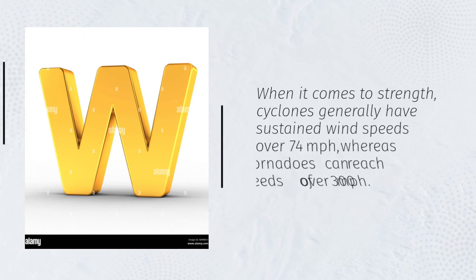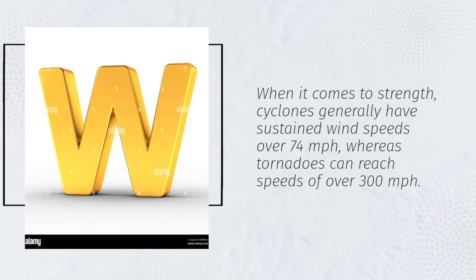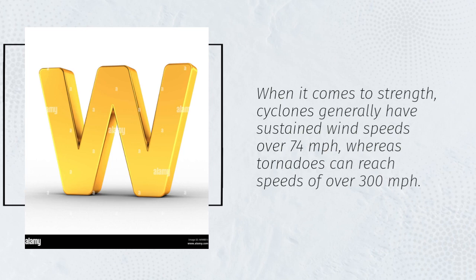When it comes to strength, cyclones generally have sustained wind speeds over 74 mph, whereas tornadoes can reach speeds of over 300 mph.